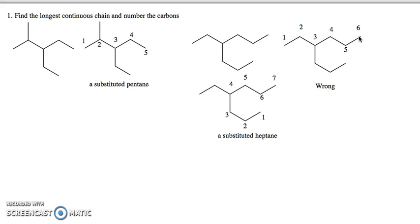The longest continuous chain does not have to be in a straight line. Remember, we have free rotation around single bonds in an alkane, so we could rotate any of these bonds and arrange the chain so it is actually in a straight line. We're looking for the longest continuous chain no matter which direction we trace through the molecule.